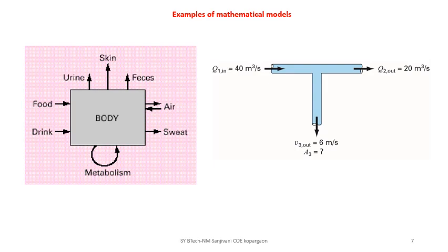This figure shows examples of mathematical models — including a model of a human body and a model of a fluid junction. For the fluid junction, you can use the continuity equation to find the required area of a secondary conduit for a given fluid velocity. The human body model involves many parameters and complex interactive functions.